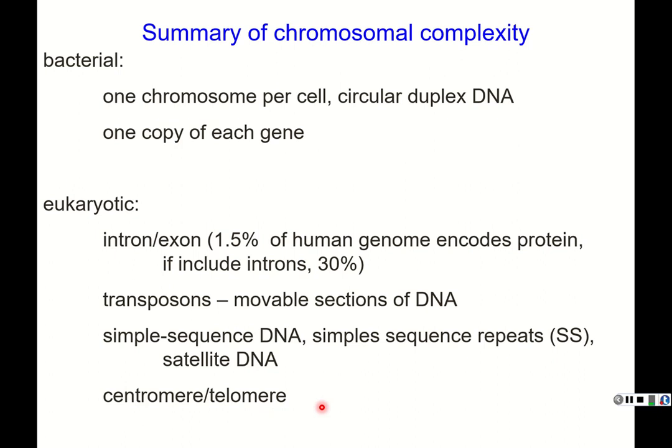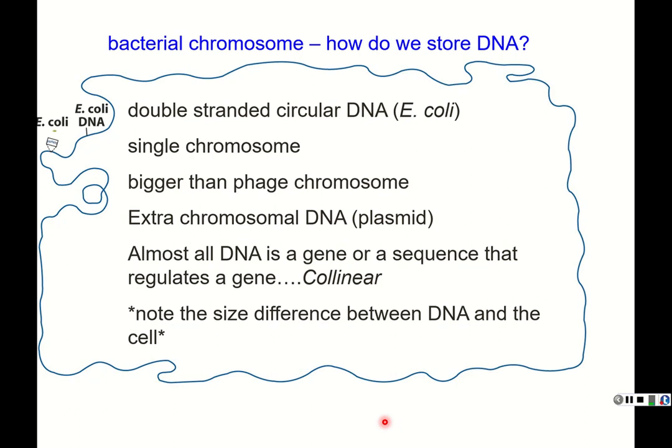Looking at bacteria first — how do they store their DNA? Again, it's double-stranded, circular, single-chromosome DNA. It's bigger than the bacteriophage chromosomes. Sometimes bacteria can have extra-chromosomal DNA, which we call plasmids. Those are smaller circles of DNA.